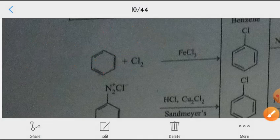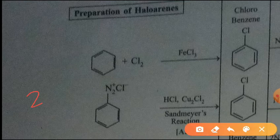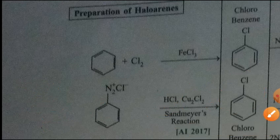The second method uses benzene diazonium chloride. Benzene diazonium chloride reacts with HCl and Cu₂Cl₂ (cuprous chloride) in the Sandmeyer reaction to get chlorobenzene.